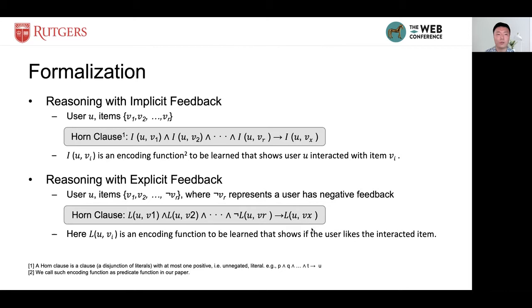all the observed interactions can be treated as true. So, we have everything on the left side to be true. Then, to determine if we want to recommend the item vx to the user u, we only need to make sure that the entire logic expression is true.